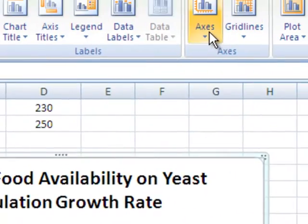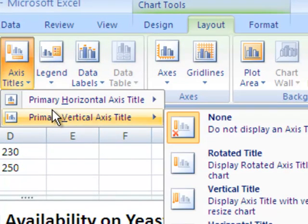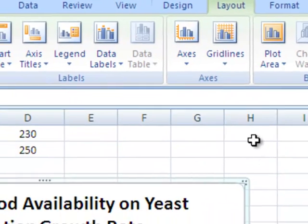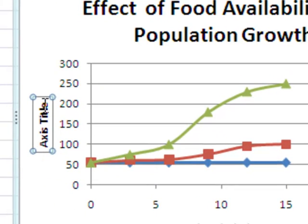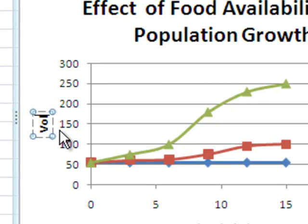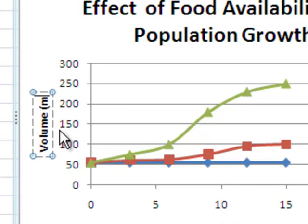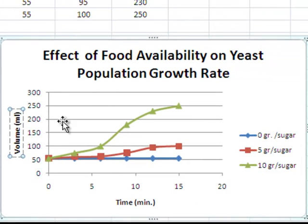And then we go back up to the axis titles and we look for our vertical. We're going to have a rotated title, and we're going to select that, and put in volume and the units. And that should be it. We now have our chart the way it should look.